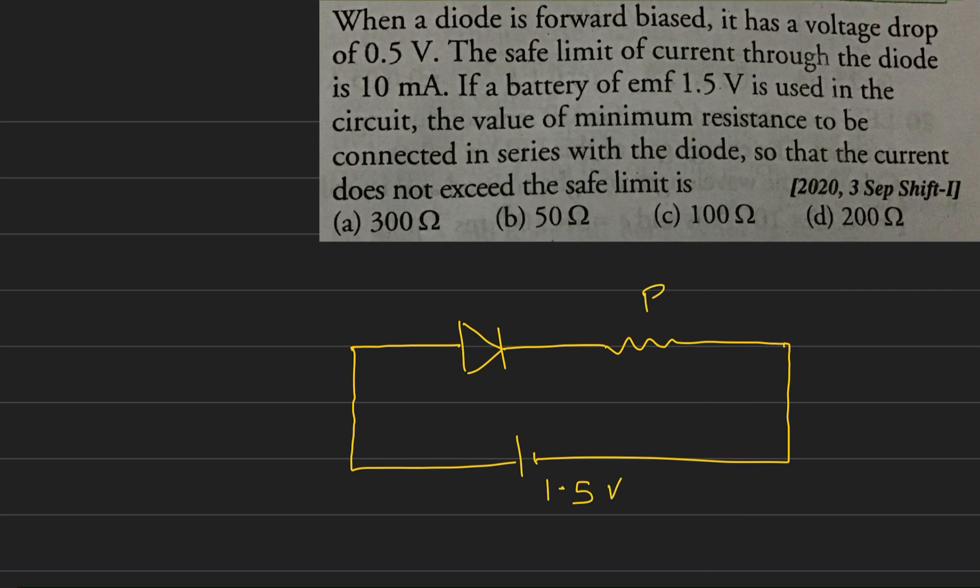Here is the resistance. Now we need to find this resistance value. The voltage drop across the diode is 0.5 volt, which means the potential barrier is 0.5 volt. The safe current is 10 milliampere, so we are finding the resistance value for which safe current flows.